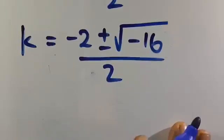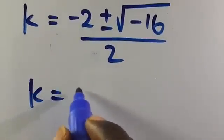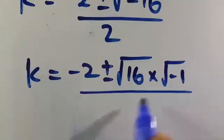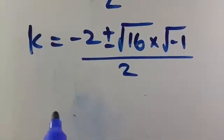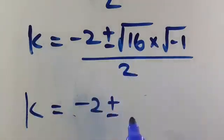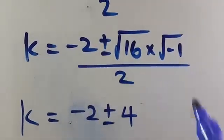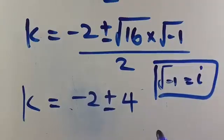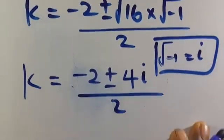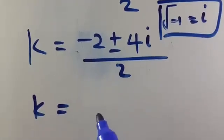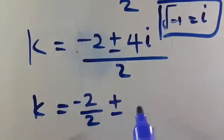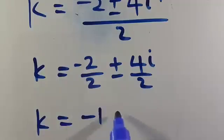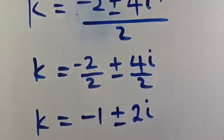We can write the square root of minus 16 as square root of 16 times square root of minus 1. The square root of 16 is 4, and the square root of minus 1 is i in complex numbers, so we have 4i. Therefore k equals (minus 2 plus or minus 4i) divided by 2, which gives k equals minus 1 plus or minus 2i.